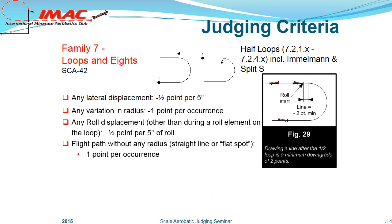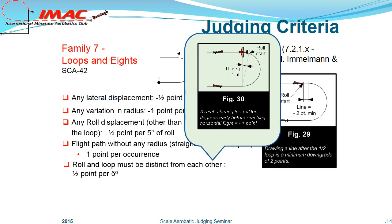If some portion of the loop doesn't have a radius — in other words, a flat spot — then one point is deducted for each occurrence. When a roll is required either before or after the loop portion, the roll and the loop must be distinct. The pilot may start and exit the roll before the loop is completed, as in figure 30, or, in the case of an entry rolling element, start the loop before the roll is finished. In either case, judges should deduct one-half point per five degrees for the overlapping roll and loop.